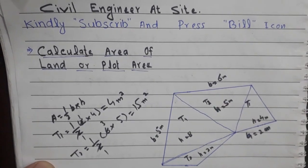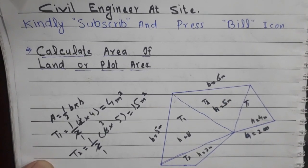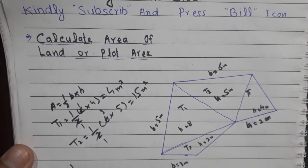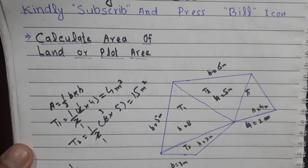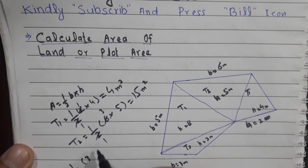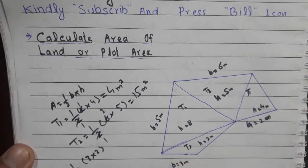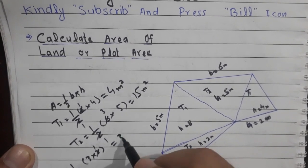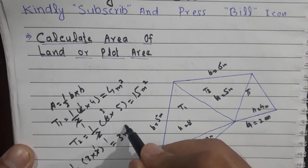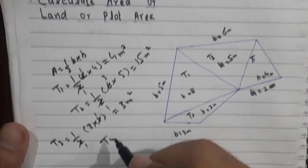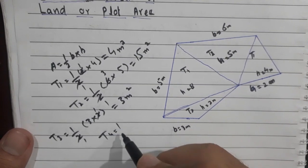Triangle number three: the base is 3 meters and the height is 2 meters. Area = (3 × 2) / 2 = 6 / 2 = 3 meters squared. So the area of triangle number three is 3 m².